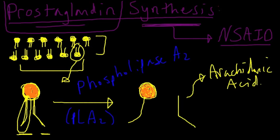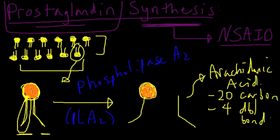And arachidonic acid, as we saw in our last video, is a 20-carbon molecule that has four double bonds and is actually an omega-6 fatty acid. So it's something that we obtain through our diet.